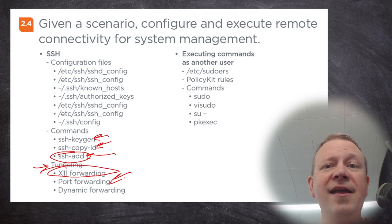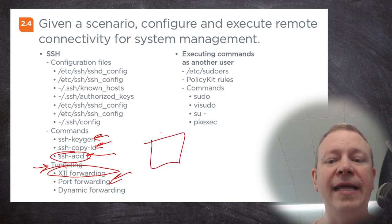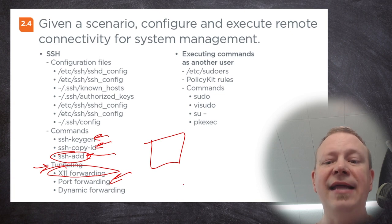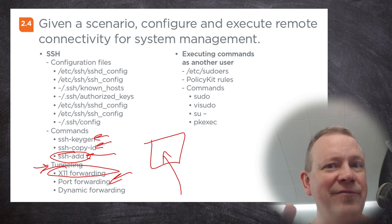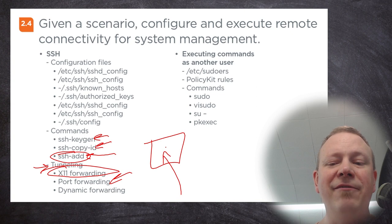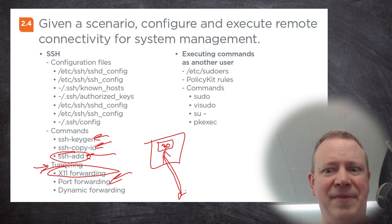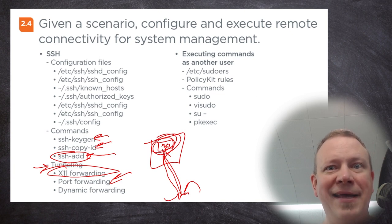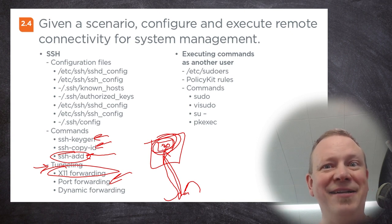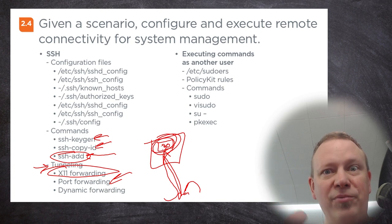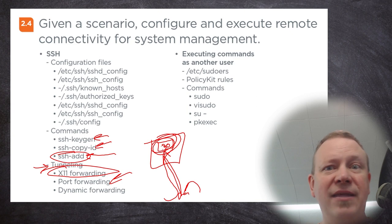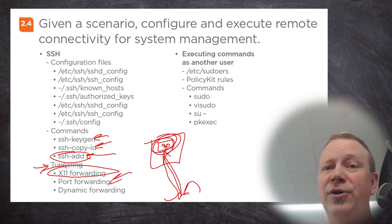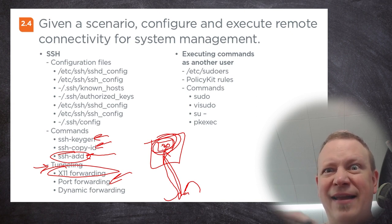Port forwarding is something you might actually do a lot. Say you have a web server running on a computer but it's only listening on localhost — not on the external interface. You can SSH into that server and tunnel traffic: forward localhost port 80 through the SSH tunnel to your local computer on port 8000. When you connect to your local port 8000, it actually connects to the remote server's port 80 as if you were standing right there. It's a really convenient way to test things or access a specific service on a remote server for configuration.